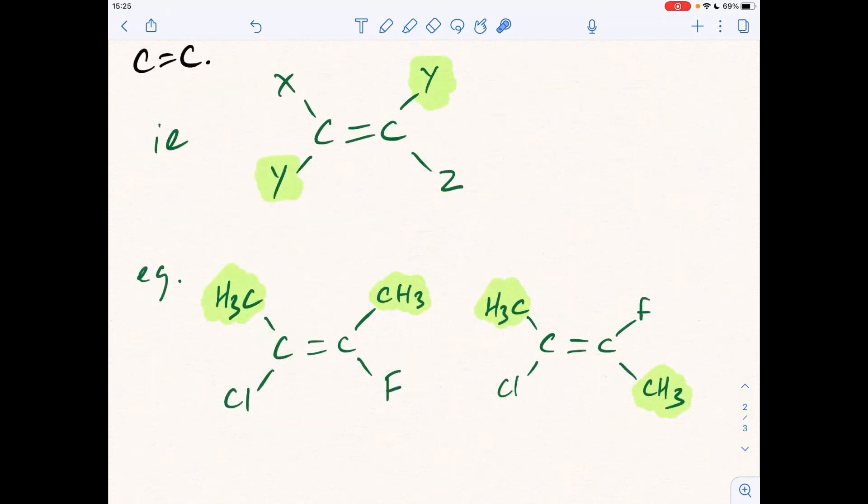So in terms of a specific example, we could have something like this. So you can see that my Y, my identical group in this case, is a CH3 group. So the two spatial arrangements they could have are both on the same side of the C=C double bond, so both pointing up, or diagonally opposite.